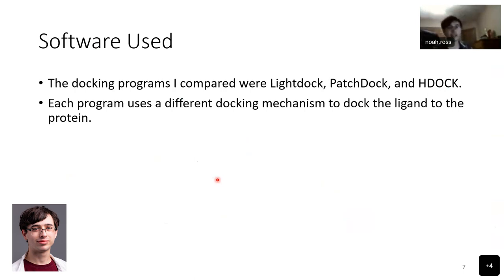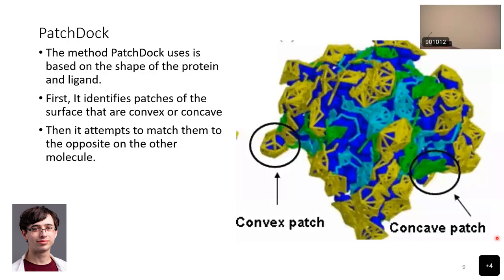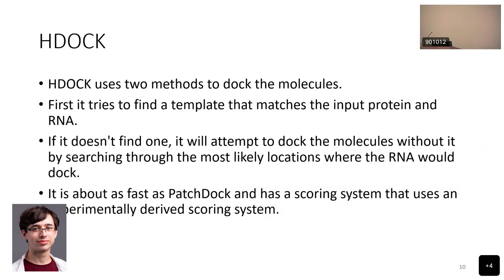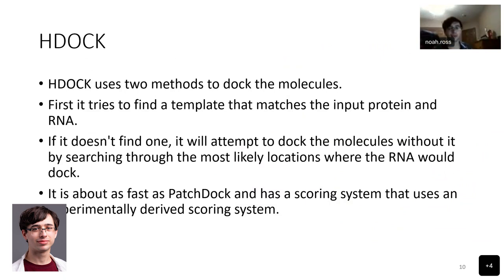HDock uses two methods to dock the molecules. It first tries to find a template that matches the input protein and the RNA. If it doesn't find one, it will attempt to dock the molecules without a template by searching through the most likely locations where the RNA would dock. It's about as fast as PatchDock and has a scoring system that uses experimentally derived results.